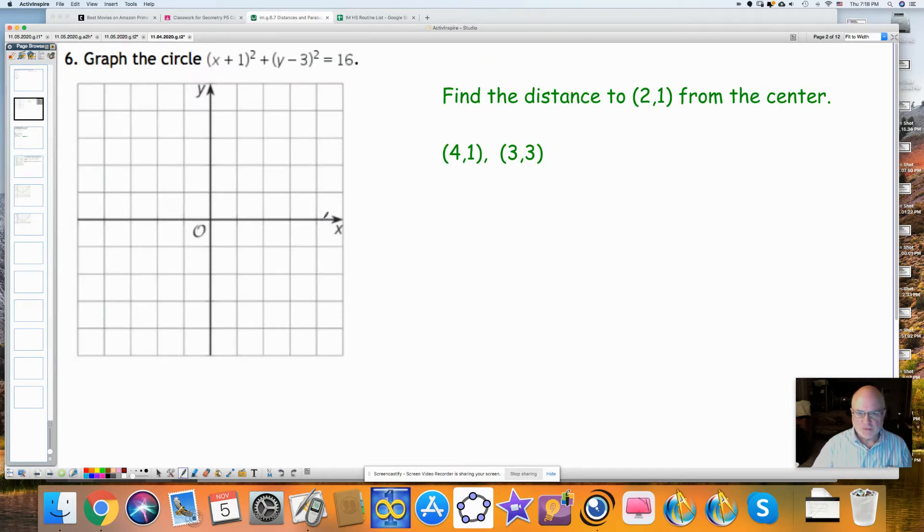We're asked to graph the circle and to find out if these points are on the circle or how far they are from the circle. So I'm going to graph the circle. It has a center in the form (x - h)² + (y - k)² = r². My radius is going to be equal to 4, and my center is at (-1, 3). So if I go -1, 3, and I look 4 up, 4 to the right, 4 to the left, 4 down, I can draw my circle.